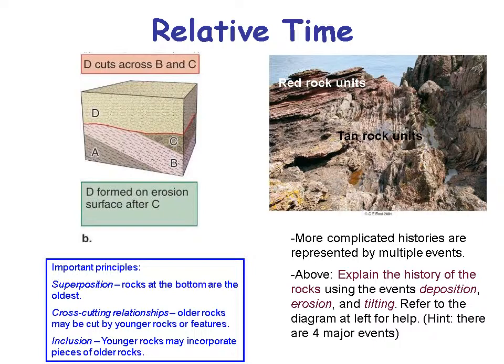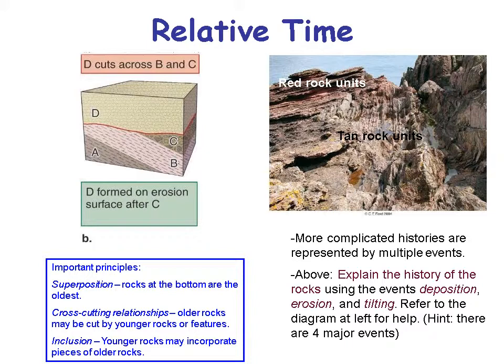Here's another example of relative time: we have red rock units on top of tan rock units with an erosional area between them. The tan rocks would have been deposited horizontally, then tipped, then eroded, and then the red rock units deposited on top. The principles are: superposition — rocks at the bottom are oldest, so A is older than B, which is older than C, which is older than D. Cross-cutting relationships — older rocks may be cut by younger rocks or features, so if A, B, and C are all cut by D, then D is younger than the other three.